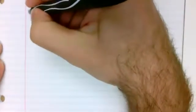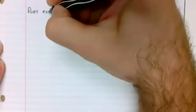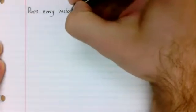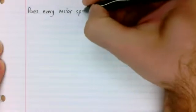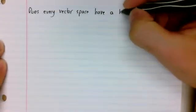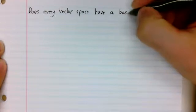Let's ask what I consider to be an interesting question. This is a bit of history of mathematics. Does every vector space have a basis?